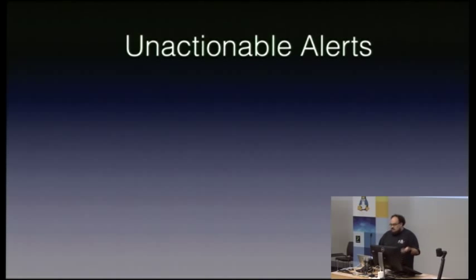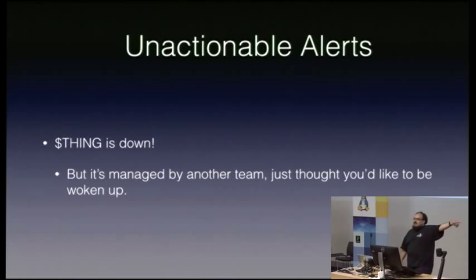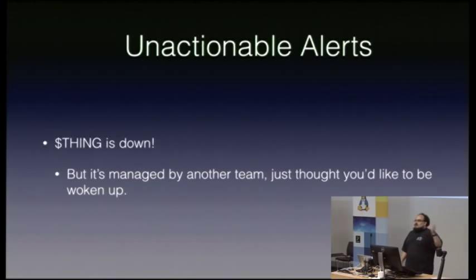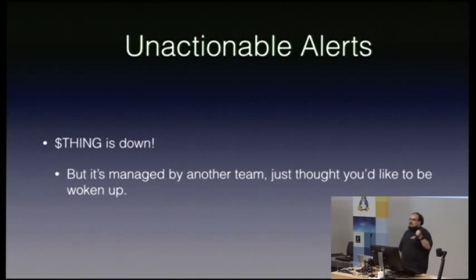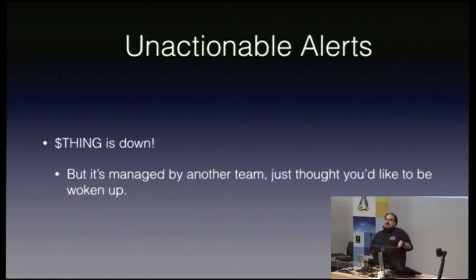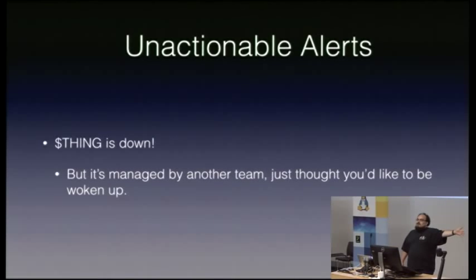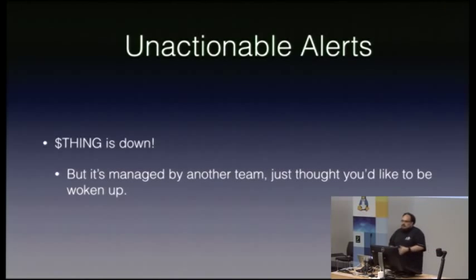What about unactionable alerts? Something's down, but it's managed by that team over there. Why are you alerting me? Some organisations have structural issues where two parts of the same org will only ever talk through a third-party vendor — amazingly common in large bureaucratic telcos, and in many large ex-government organisations. Monitoring someone else's systems might be the only way you'll know if there's a problem, or that other team won't monitor to your required quality. But in general, you shouldn't need to care if someone else's stuff is down.